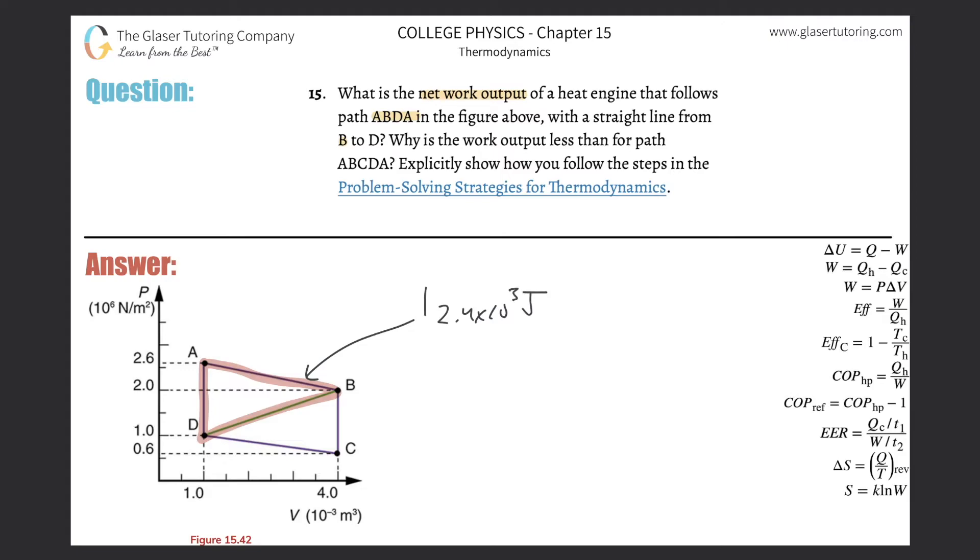And then it says, why is this work output less than for path ABCDA? Well, because there's less area. ABCDA, if we look at the picture here, has a much larger area—twice the area that is of ABD. And that would be, I guess, why. I mean, we can get into different levels of why, but I'll spare you the philosophical discussion.